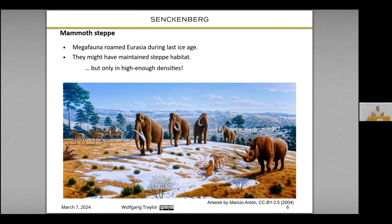These ice age giants shaped the environment — they trampled, they fed on the vegetation and the nutrient cycling — and thereby changed the ecosystem, perhaps even maintaining their own ecosystem of steppe vegetation by keeping away tundra and forests. And this theory only works if there are actually enough of these large herbivores. That's why I'm interested in simulating their densities.